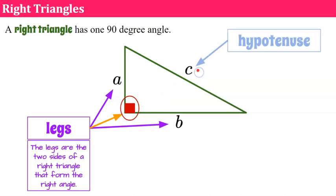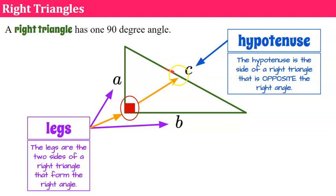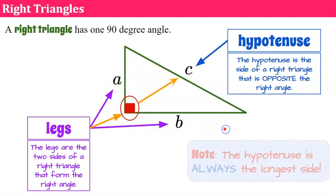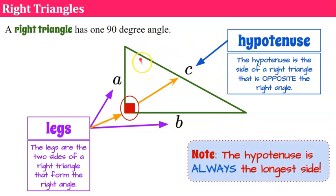Our other side which here is labeled c is what we call the hypotenuse. The hypotenuse is the side of the right triangle that is opposite the right angle. Special thing to note: your hypotenuse is always your longest side.